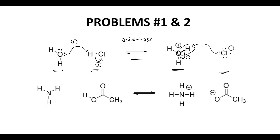Let's look at the next question. In the next question, we're going to make a new NH bond in one of our products, and we will have broken an OH bond. We're going to need a lone pair — we're going to use a lone pair on nitrogen — and we start our arrow where the electrons are and point our arrow to where the electrons finish. They're going to finish on that hydrogen, so we're going to make an NH bond. Hydrogen can only make one bond, so we are going to break this bond to hydrogen, and those electrons end up on that oxygen.